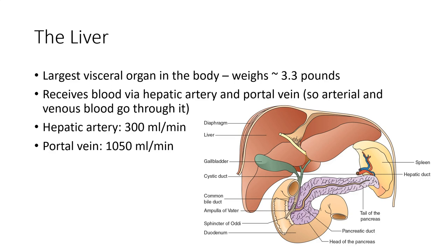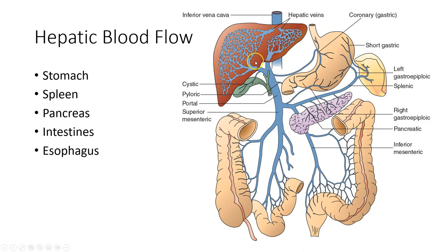One of the functions of the liver is to filter, and you can see this through the hepatic blood flow diagram. The hepatic portal vein drains the organs of our digestive system, including our stomach, pancreas, spleen, intestines, and also the esophagus. This allows blood from our digestive system to drain into the liver, allowing it to filter out substances and process them as needed.